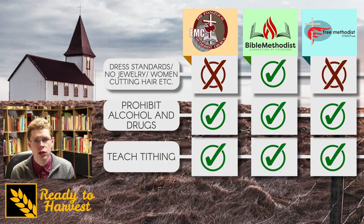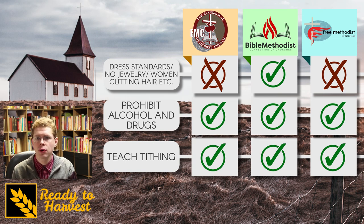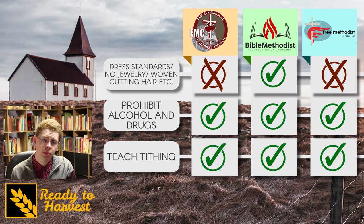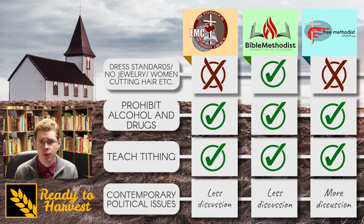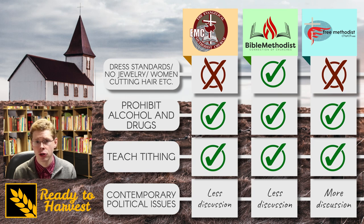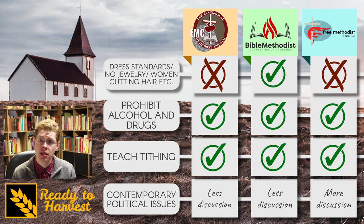All three denominations teach total abstinence from alcohol and recreational drugs. All three denominations teach that Christians are to give no less than 10%, or the tithe, of their income to the church. On some contemporary issues like critical race theory or critiques of capitalism, there is more discussion of views toward the more progressive positions in the Free Methodist church than in the other two denominations, partially because the denomination itself is significantly larger than the other two.